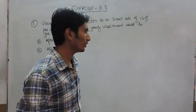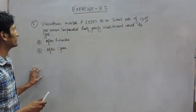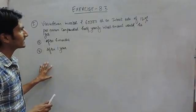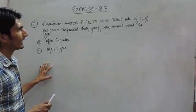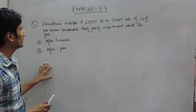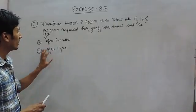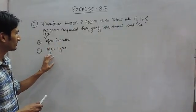Hello everyone, in this video we are going to solve question number 5. Vasudevan invested Rs. 60,000 at an interest rate of 12% per annum compounded half yearly. What amount would he get after 6 months and after 1 year?